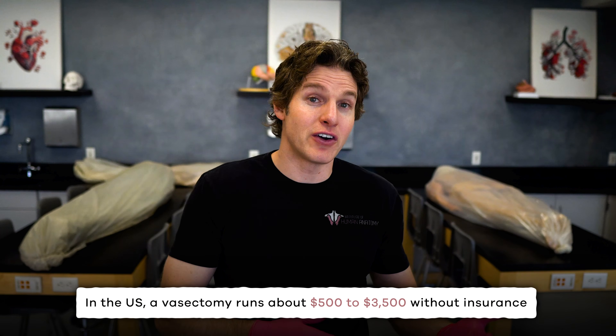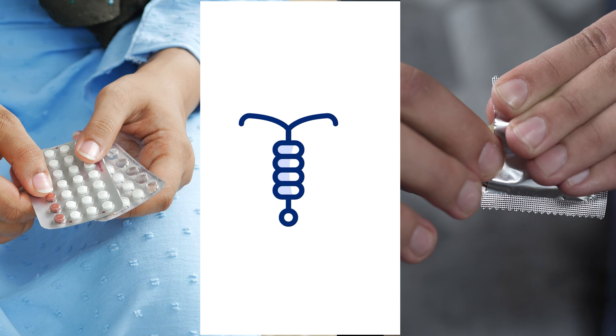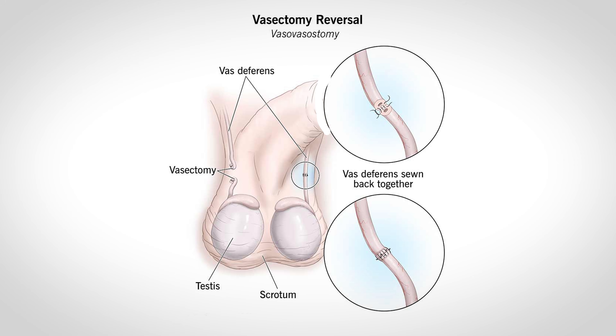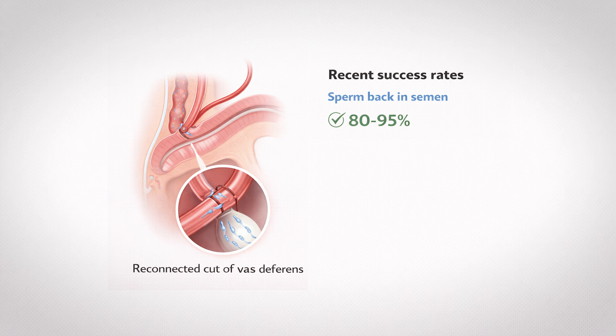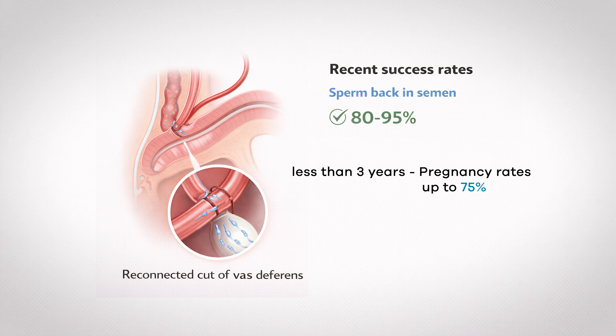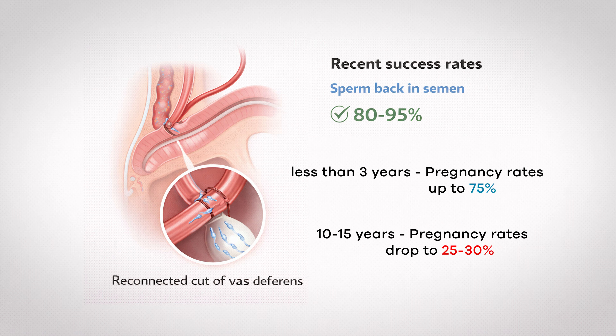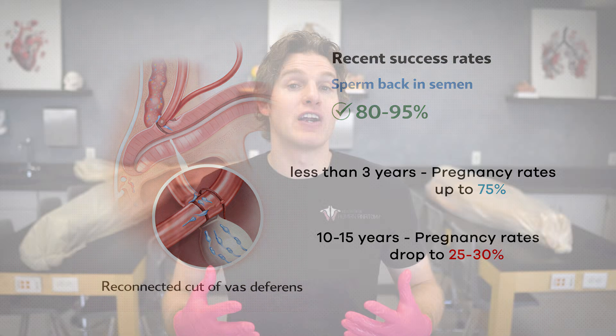The cost compared to other birth control options is pretty reasonable. In the US, a vasectomy runs about $500 to $3,500 without insurance depending on where you go. But over a lifetime, that's often cheaper than years of pills, IUDs, or condoms. And unlike many other forms of contraception, there's no daily remembering or hormonal side effects. It's permanent-ish, so it's recommended for people who are pretty sure they don't want kids or any more kids. That said, it can be reversed. About 80 to 95% success for sperm getting back into the semen — but there's a big caveat: time. If it's been less than three years, pregnancy rates can be up to 75%, but if you wait 10 to 15 years, they drop to around 25 to 30%.